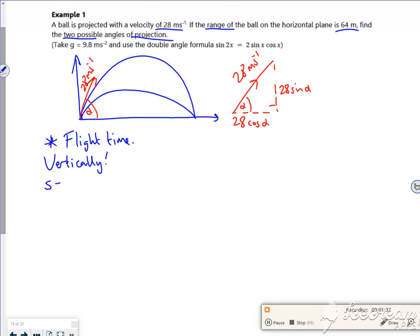So I know that s is 0, positive is going up, u is 28 sin alpha, v not concerned about, a is -9.8, and t is what I want to find. Now the t I'll be finding in terms of sin alpha. I might leave it as sin alpha.